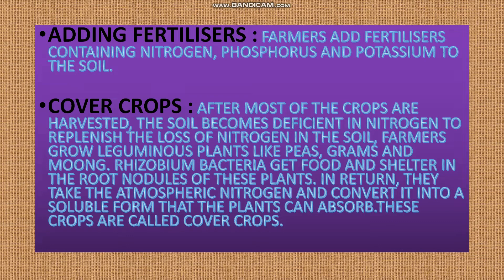Next is crop cover or cover crops. After most of the crops are harvested, the soil becomes deficient in nitrogen. To replenish the loss of nitrogen in the soil, farmers grow leguminous plants like peas, grams, and moong. Rhizobium bacteria get food and shelter in the root nodules of these plants. As I explained during nitrogen fixation, these bacteria convert atmospheric nitrogen into a soluble form that plants can absorb and use as a nutrient.